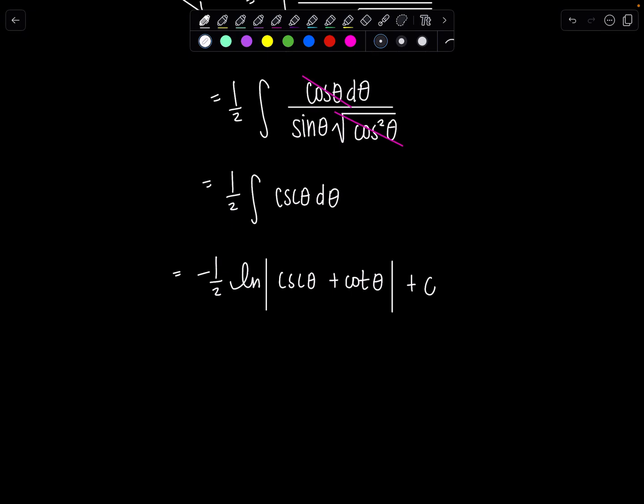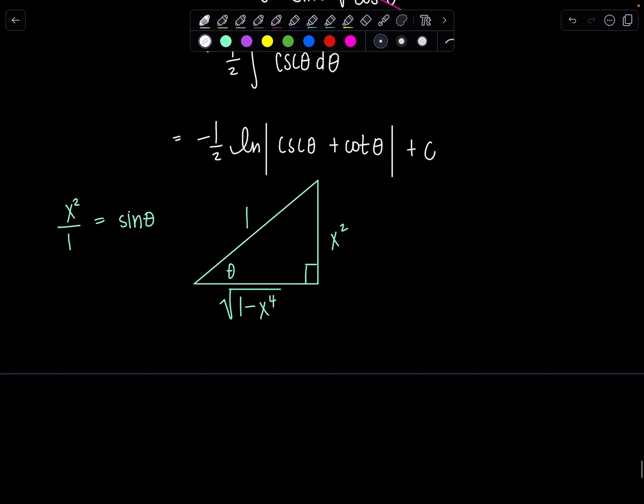Okay, then to go back to the original variable x we need to draw a triangle. So remember our substitution, we had let x squared equal sine theta. So think of that as x squared over 1 is sine theta. So let me draw a triangle where the ratio of the opposite side over the hypotenuse would be x squared over 1. And then the missing side from the Pythagorean theorem we can see that's 1 minus x to the 4th.